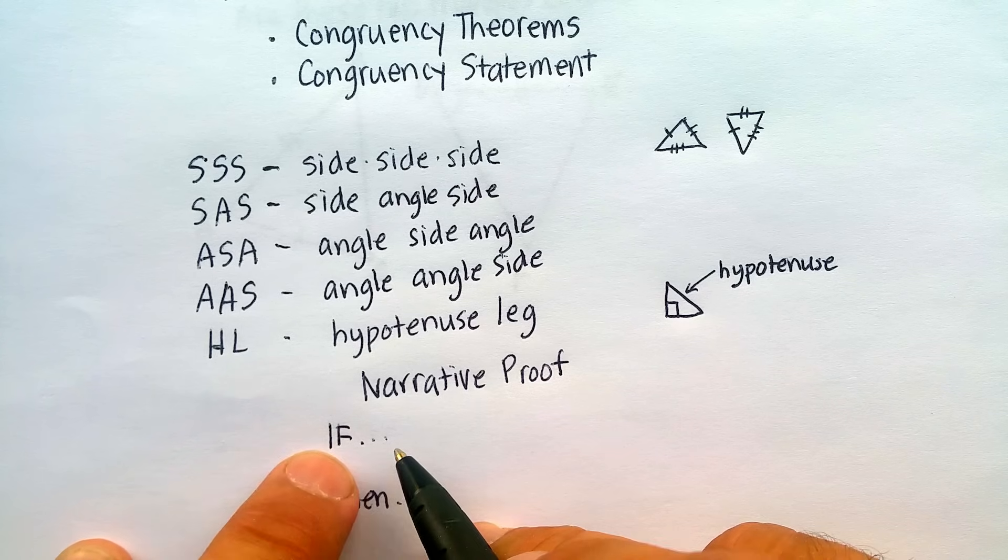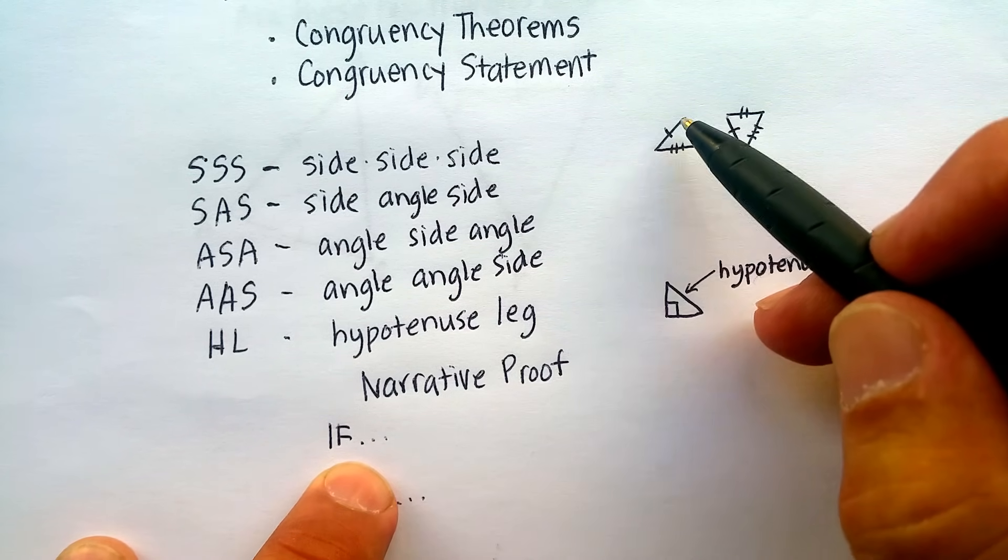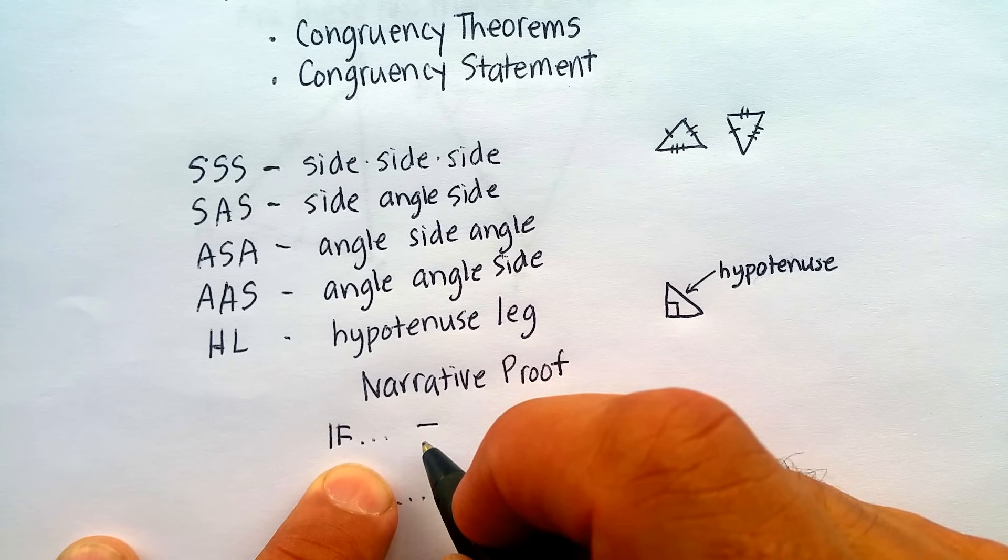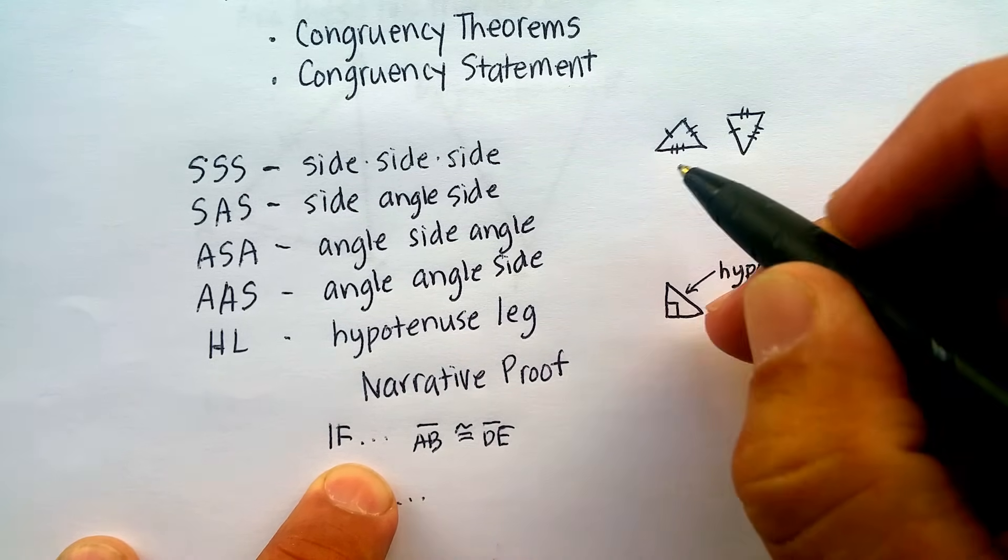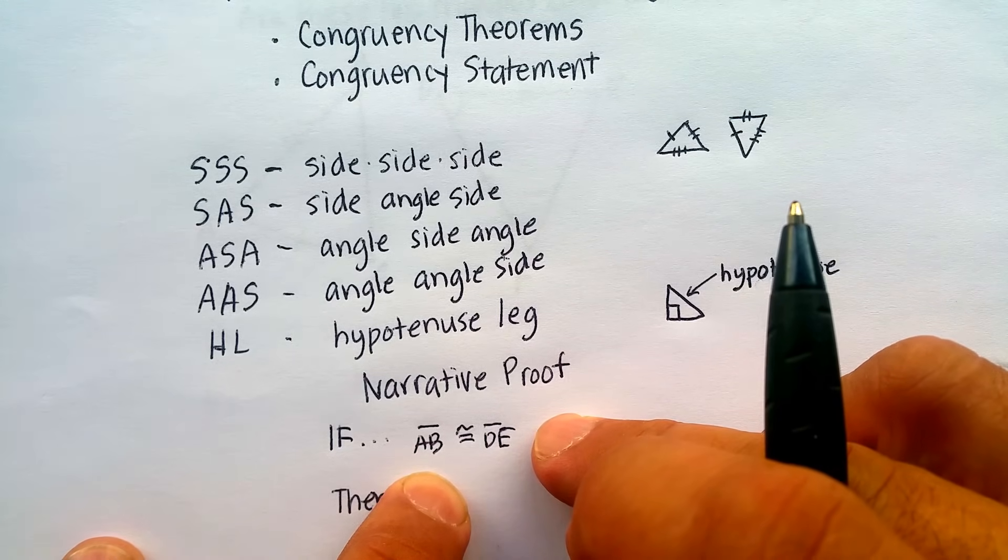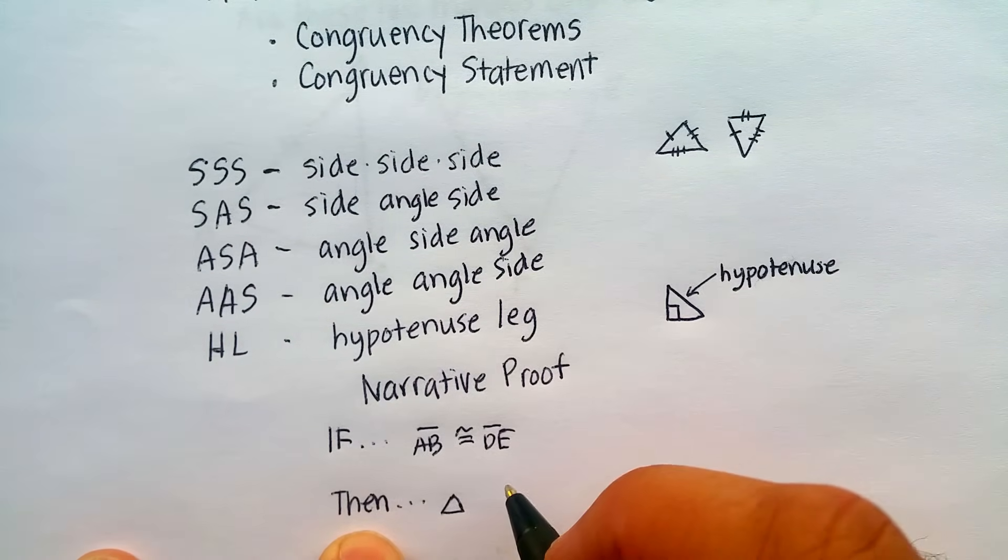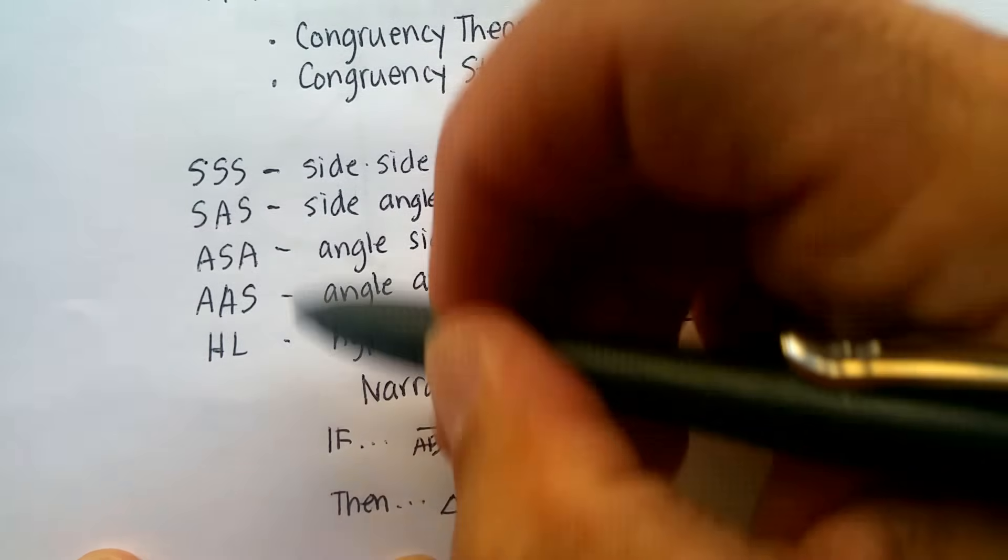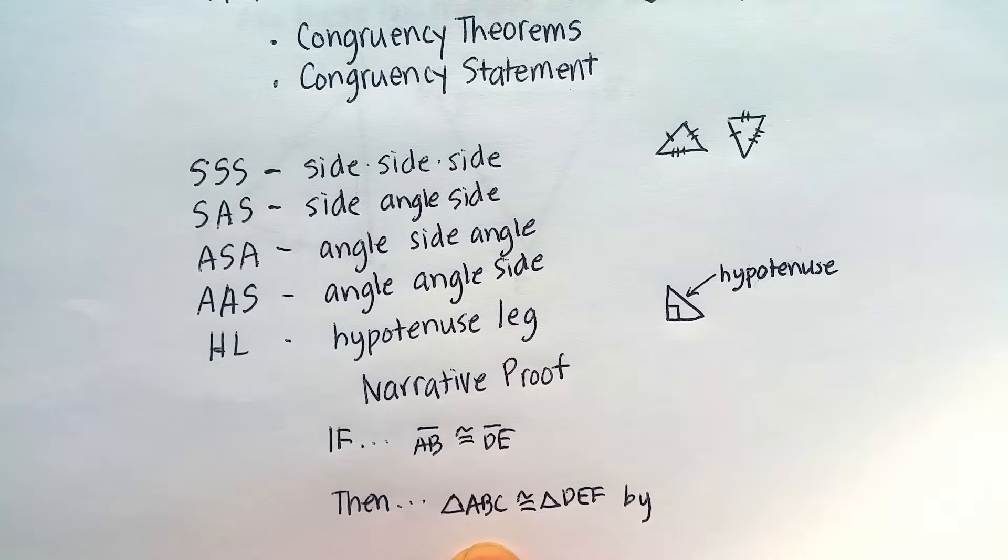And the if statement is when you actually gather your evidence. So you would say something like, if, for example, this side, we'll call it AB, is congruent to side DE, if line segment AB is congruent to line segment DE. Again, I'm assuming that these are all labeled. And then if, you keep on going with all your proofs, all the evidence that gathers together. And then if it fits one of these patterns, then you say, then triangle ABC is congruent to triangle DEF by whichever theorem you're using. And you'd say maybe by side, side, side. Now let me be a little bit more specific and show you an example.